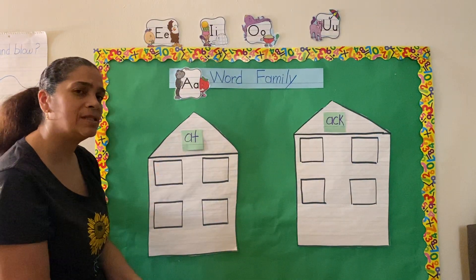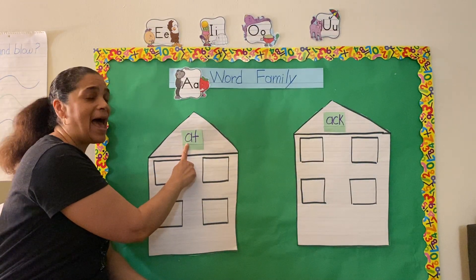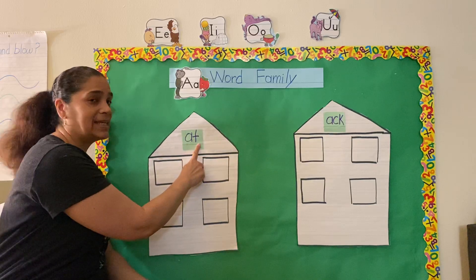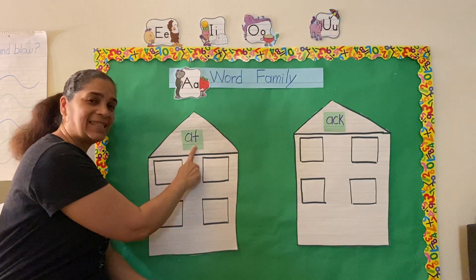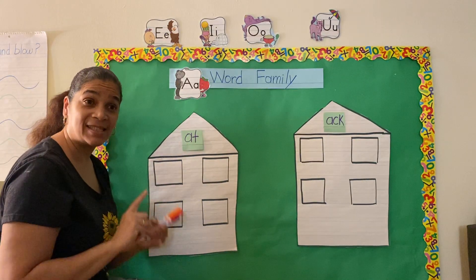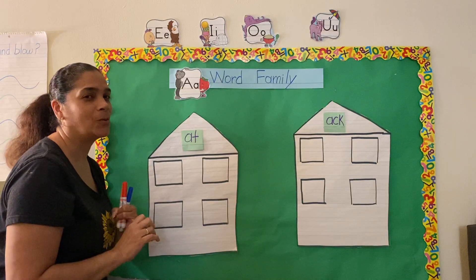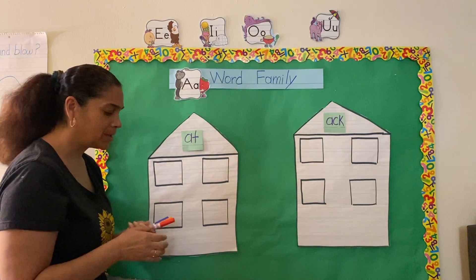So when we have an A and a T together, let's say those sounds: at. At is a sight word, but it's also a word family.